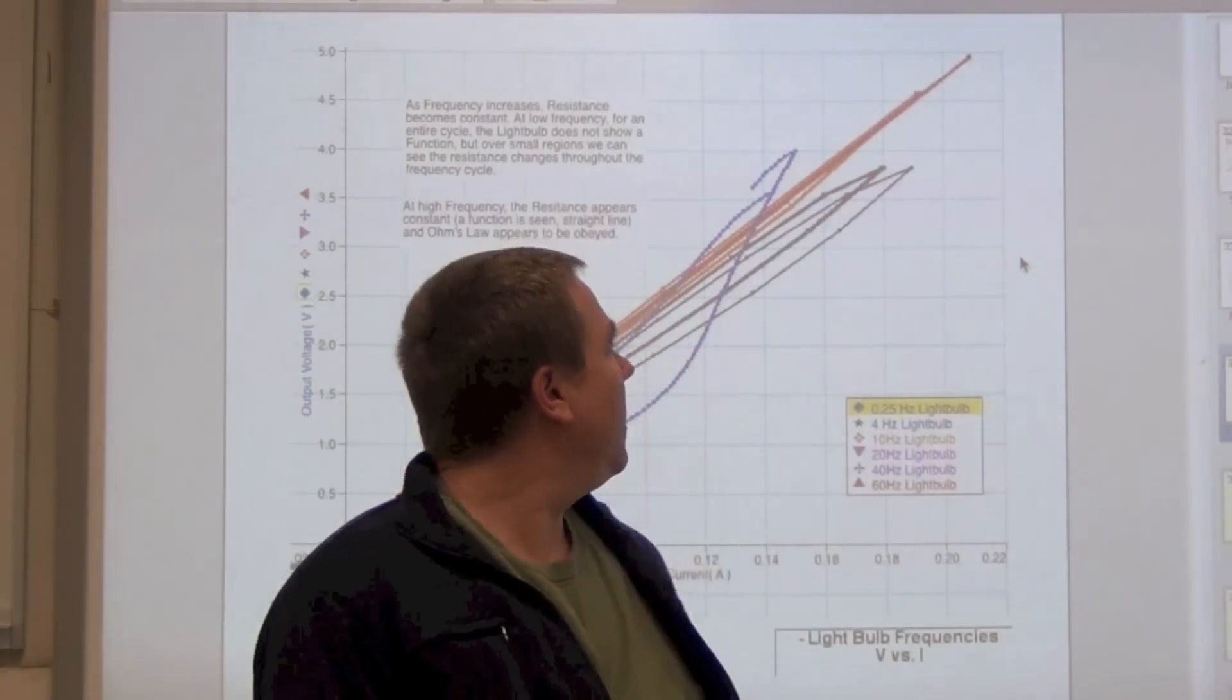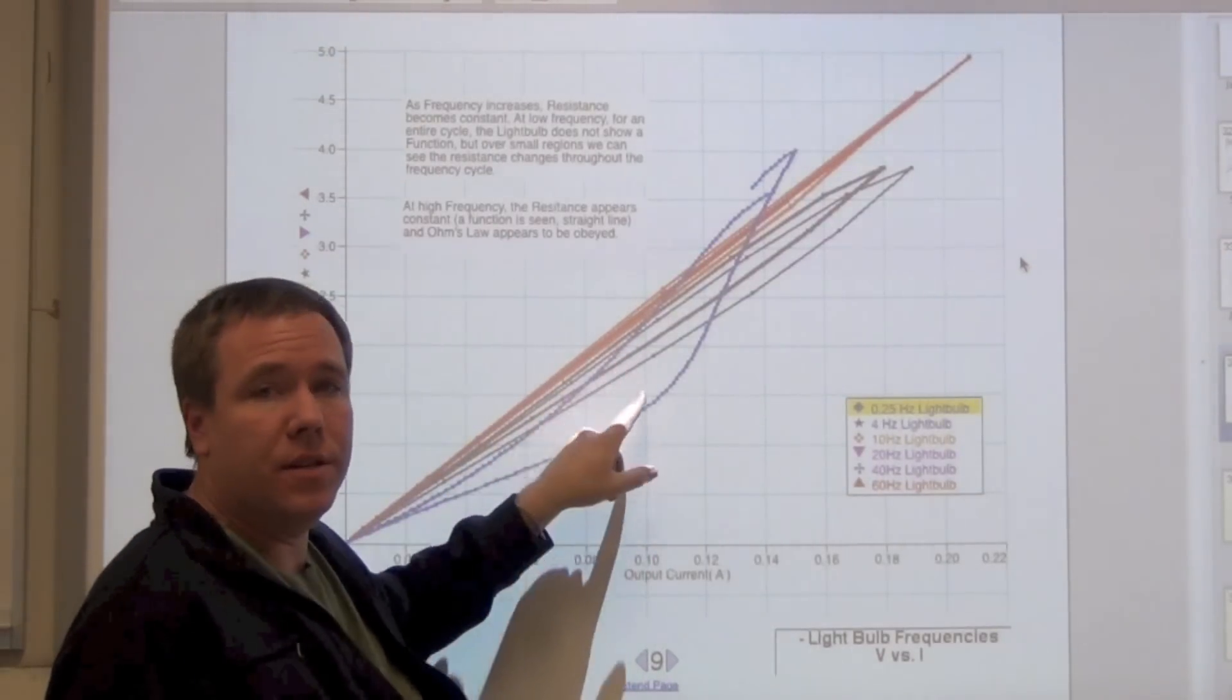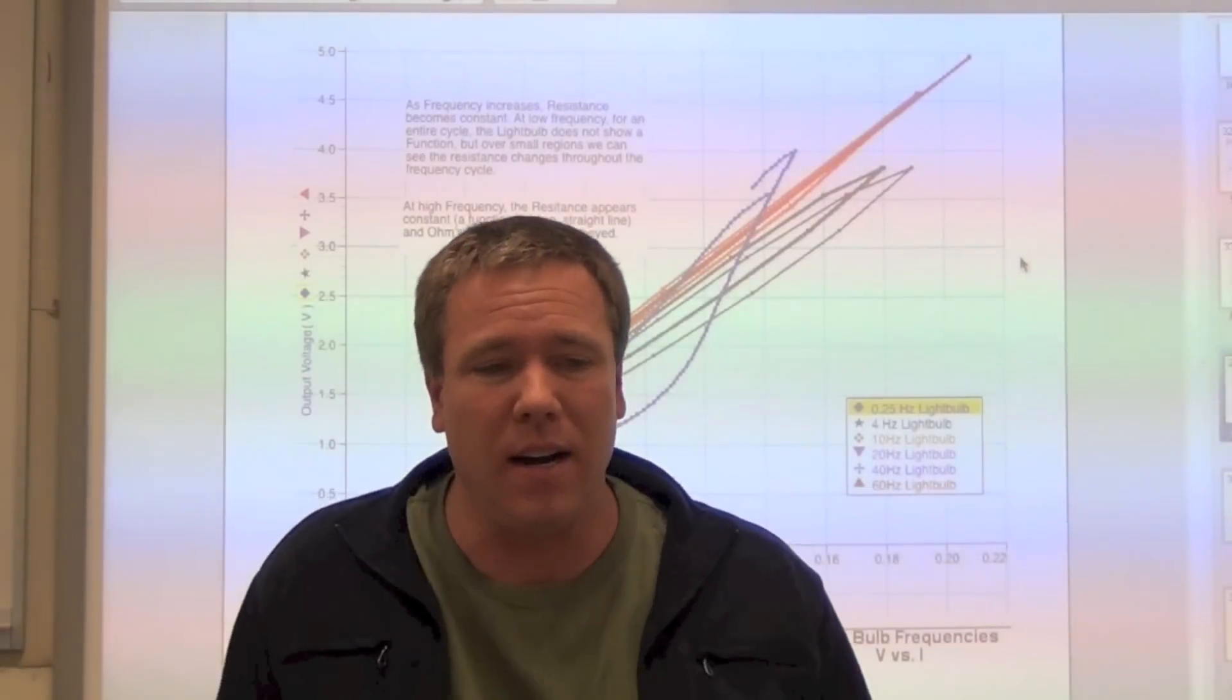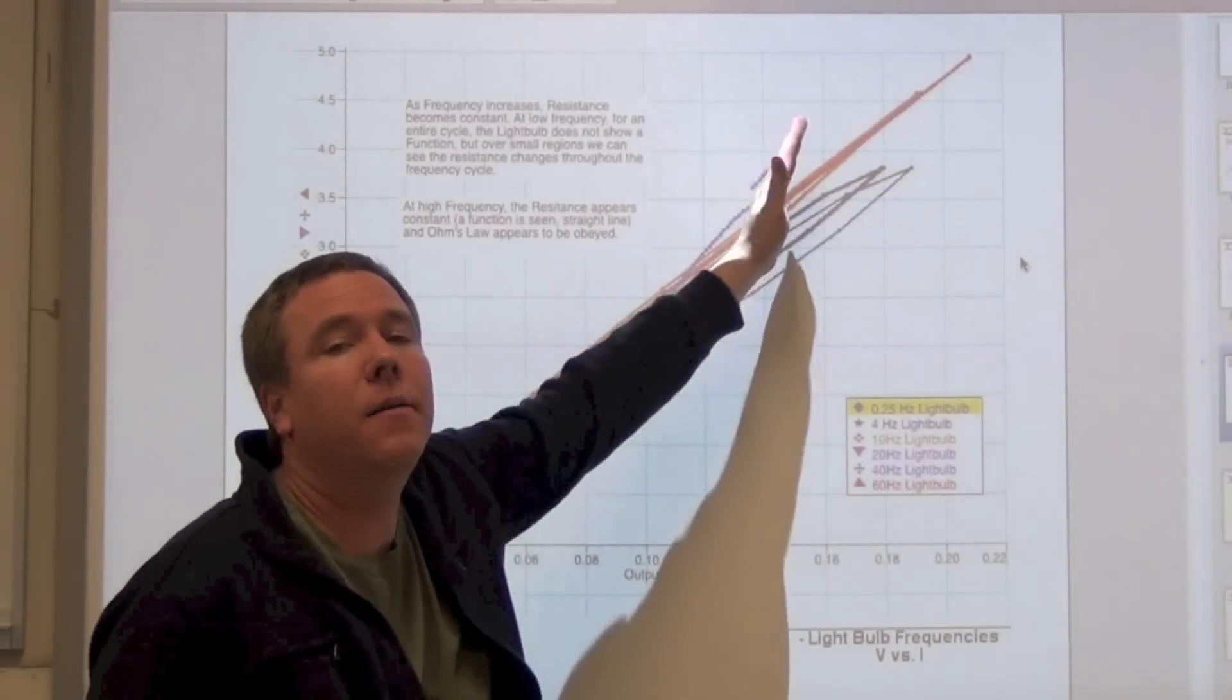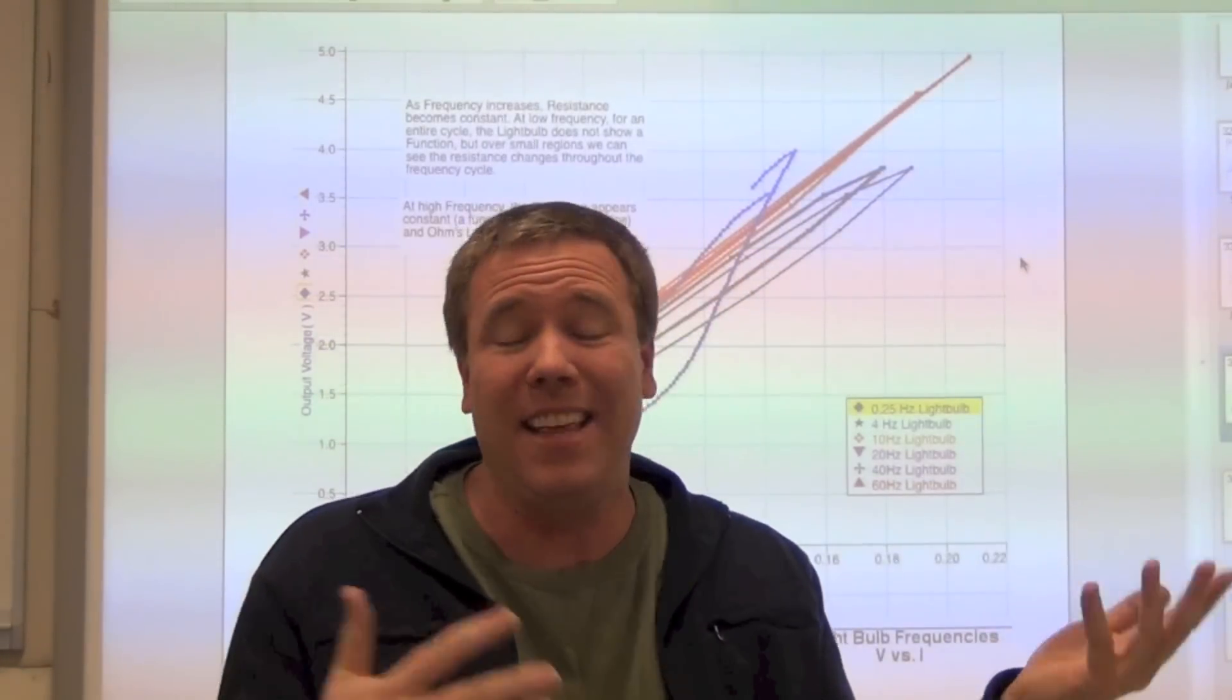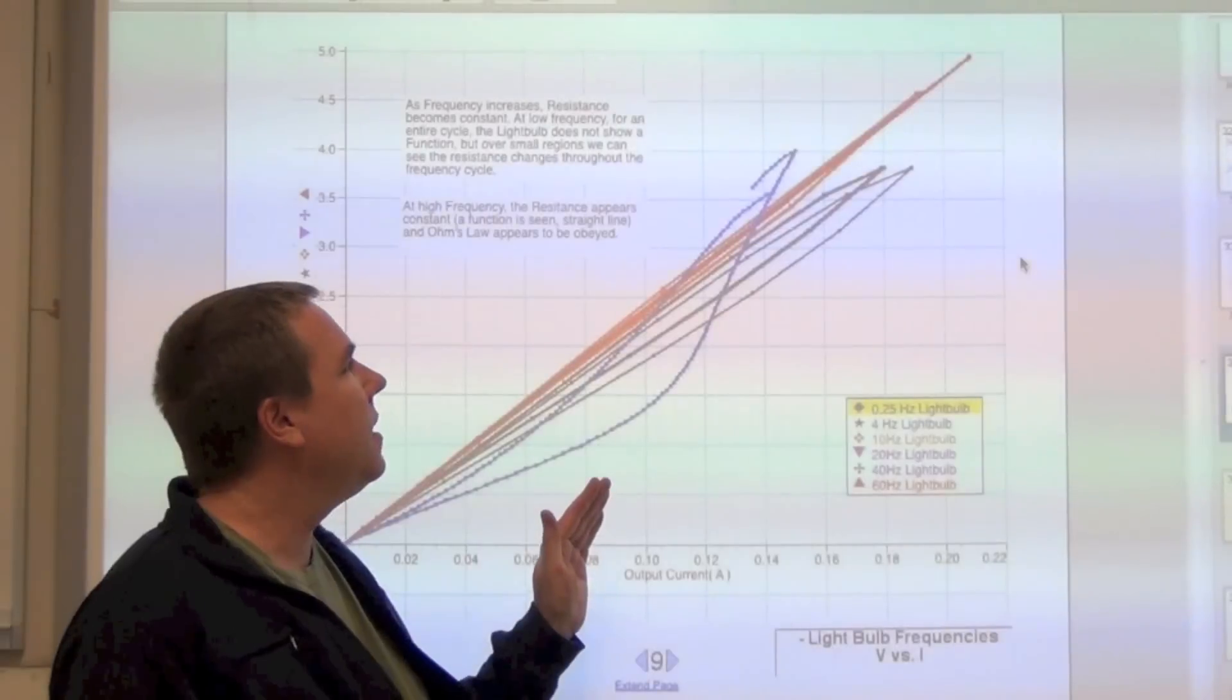Well, if we look at that curve that's curved and then it comes back around, we have to say that for one given current, there's two voltages. And so that's not a function by definition. So we'd have to say, you know, Ohm's law, I can't really address with a light bulb at low frequency if I look at the whole cycle. If I just look at part of the cycle, say, going from off to brightest, just that portion, I can talk about Ohm's law and how the resistance is changing. But when I look at the entire cycle, I have to say that's not a function. But as the frequency increases, the light bulb might reach some steady state temperature.